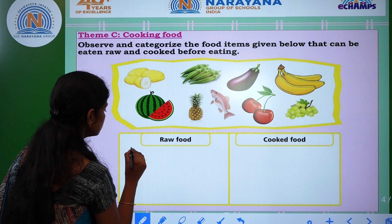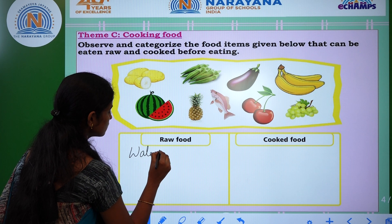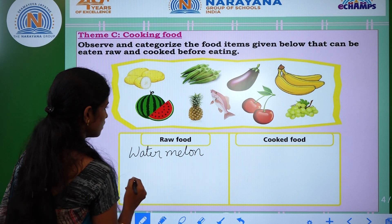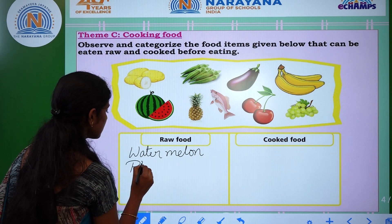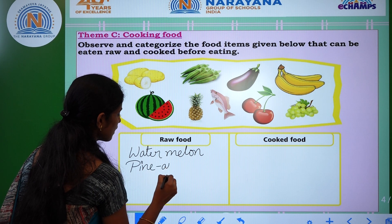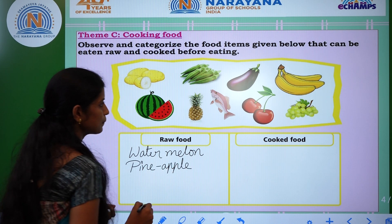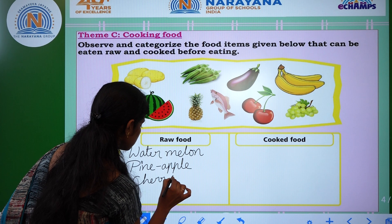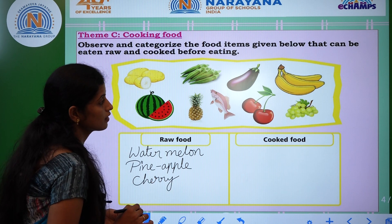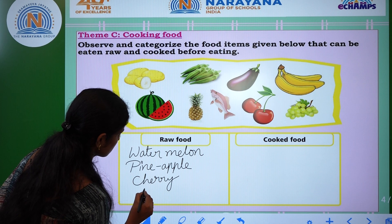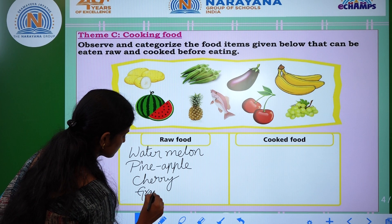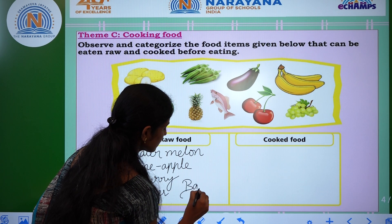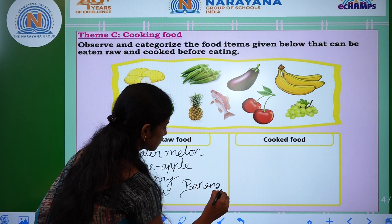Raw foods are: watermelon, pineapple — P-I-N-E-A-P-P-L-E — pineapple, cherries — C-H-E-R-R-I-E-S — cherries, grapes — G-R-A-P-E-S — grapes, and last one is banana — B-A-N-A-N-A — banana.